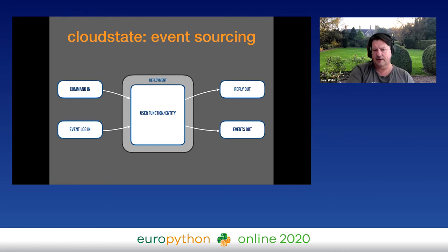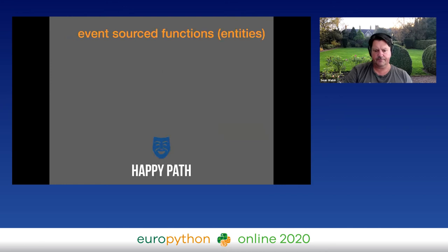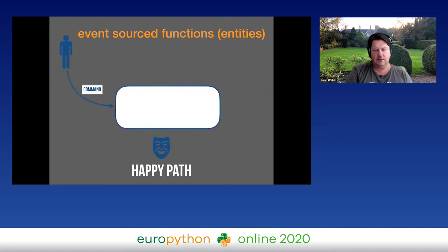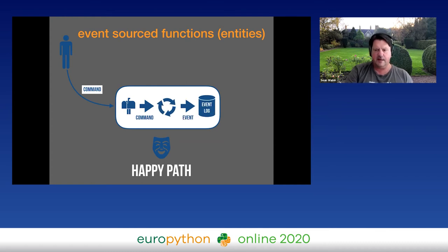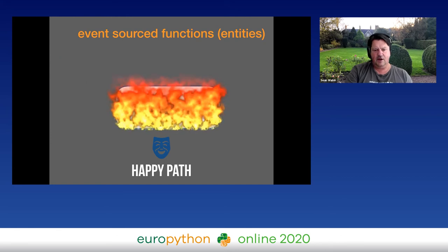The happy path for one of these functions: the user issues a command to do something on the domain, it goes into a mailbox. All of these entities are bounded by a mailbox, so there are no issues with concurrency and no blocking at all. These functions fully process a message and emit an event before even thinking about getting the next message off the mailbox. The command does some thinking, looks at its state, issues a new event which goes to the event log, and that may be subscribed to through some event bus.